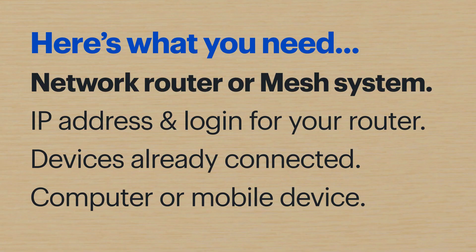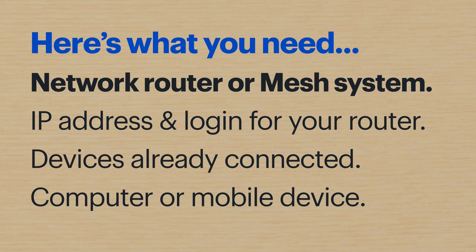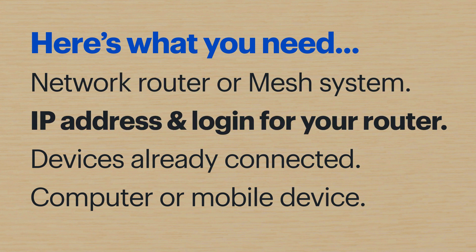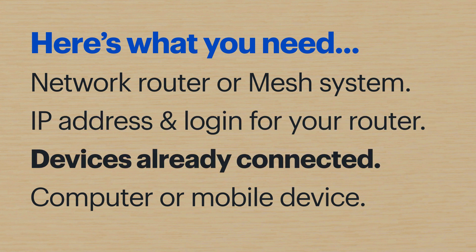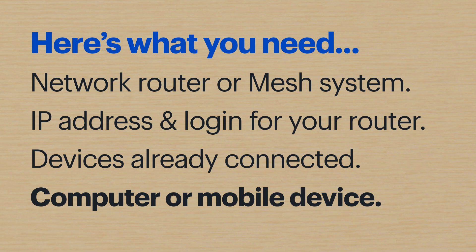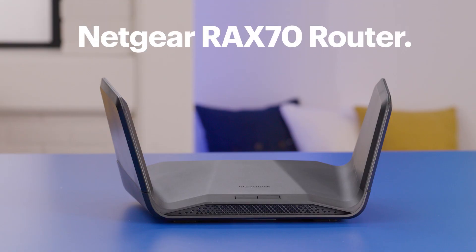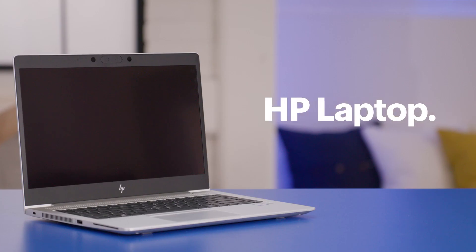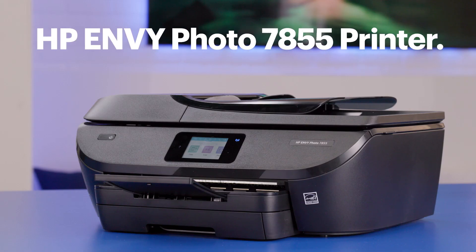Here's what you'll need: a network router or mesh system already set up, the IP address and login credentials for your router's management portal, devices already connected to that network, and a computer or mobile device like a tablet or smartphone. I'll be using a Netgear RAX70 router, an HP laptop, and an HP network-capable printer, so the steps might be a little different depending on your devices.